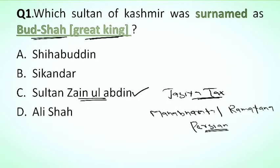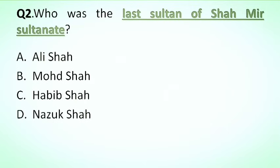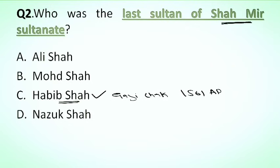Our next question is: who was the last Sultan of the Shahmir Sultanate? Options: A. Alisha, B. Mohammed Shah, C. Habib Shah, D. Nazuk Shah. The correct answer is Habib Shah. Habib Shah was the last Sultan of the Shahmir dynasty. He was defeated by Ghazi Chak in 1561 AD, and Ghazi Chak laid the foundation of Chak rule in Kashmir.